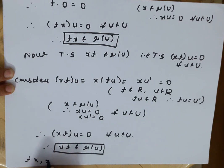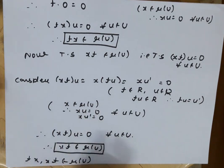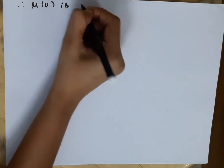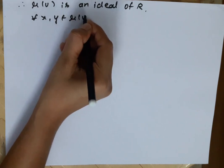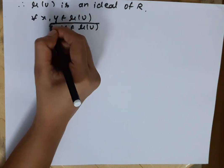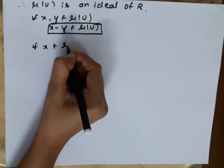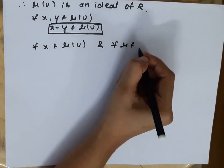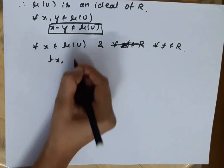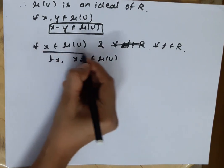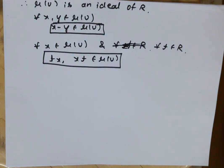So we have proved both things: tx and xt belong to R(U). We have proved all the conditions of an ideal, and therefore R(U) is an ideal of R because U is an ideal.